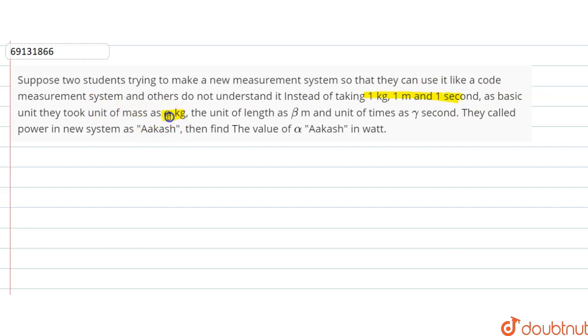they took mass as alpha kg, the unit of length as beta meter, and the unit of time as gamma second. They called power in the new system as Akash. Then find the value of alpha Akash in watt.